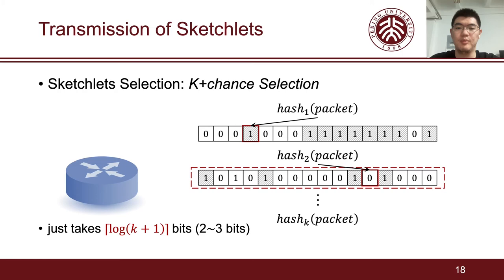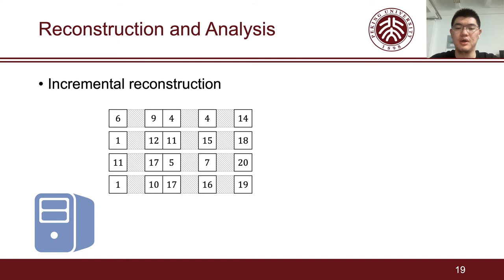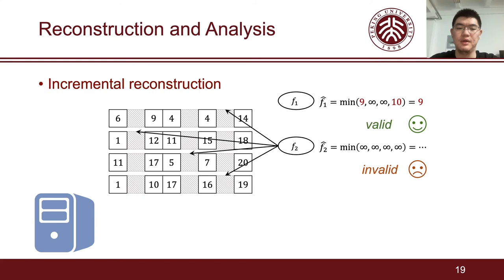Next, the global analyzer, or the end hosts, can incrementally reconstruct the sketches. We call this process incremental because the end host can report accurate results even if it only receives partial sketchlets. For example, consider we want to query the frequency of f1. We first locate the four hashed buckets. Then we return the minimum value among these buckets. In this process, we treat the value of the invalid bucket as infinity. The reported result is valid as long as one of the four buckets is valid.